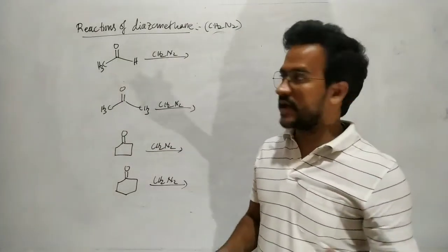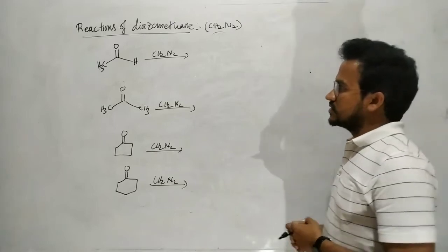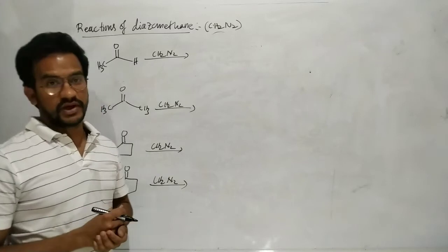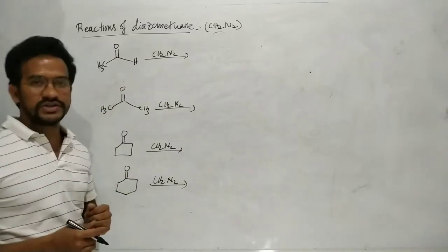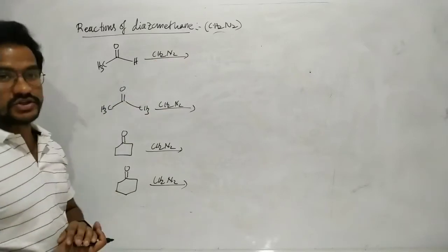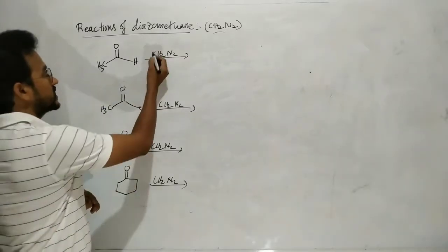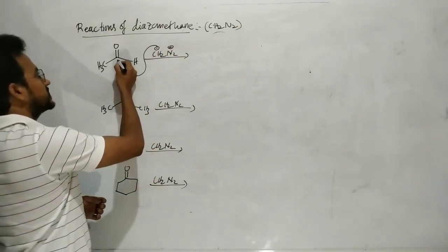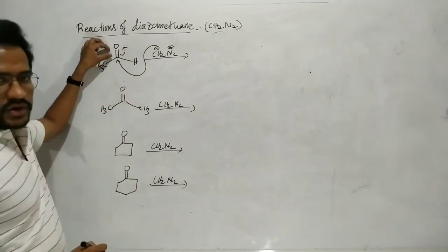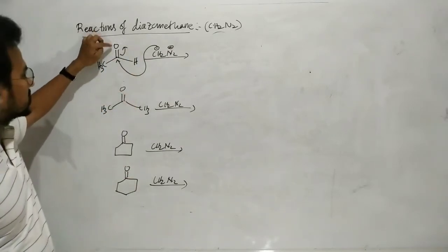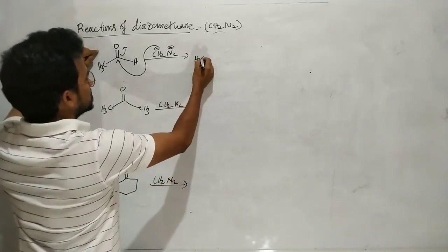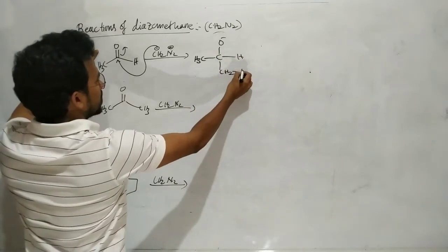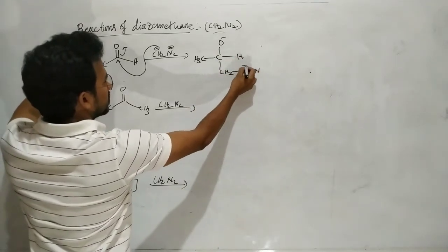Next, reactions of diazomethane with carbonyl compounds — nucleophilic addition type reactions. Carbonyl compounds have an electrophilic carbon (positive charge) and nucleophilic oxygen (negative charge). Diazomethane acts as a nucleophile because of the negatively charged CH2⁻. So CH2⁻ attacks on the positively charged carbonyl carbon, giving an intermediate with O⁻ and CH2N2⁺.